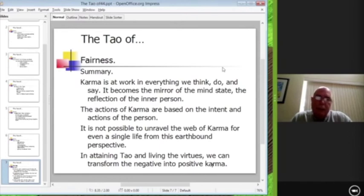Thirdly, and I believe this is really important for us to remember, it's not possible for us to unravel the web of karma. Not even for a single life. Not from this earthbound perspective. Not even for ourselves. We can't do it. It's too big. It's too much. It's too complex. It touches too many other lives. And so trying to do that I believe is a futile venture. But I think attempting to influence our accrual of karma is probably the most worthwhile activity we can engage in.